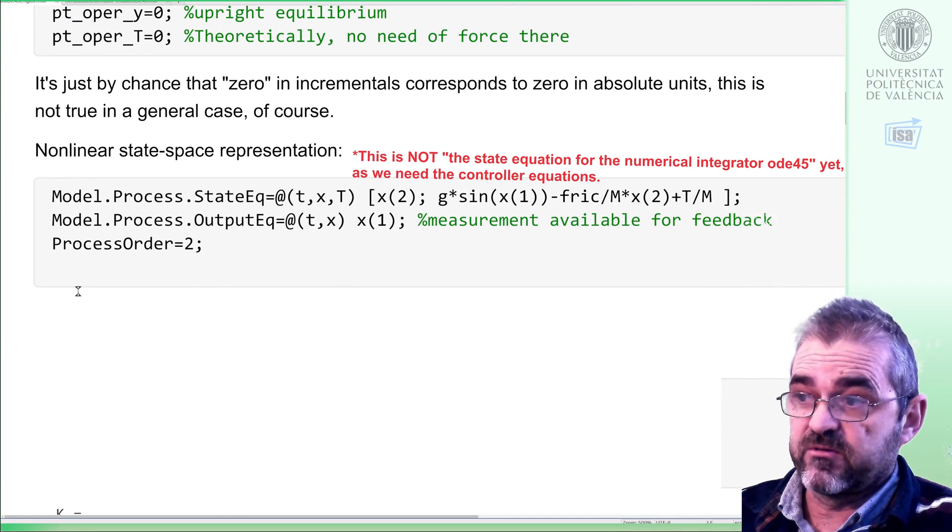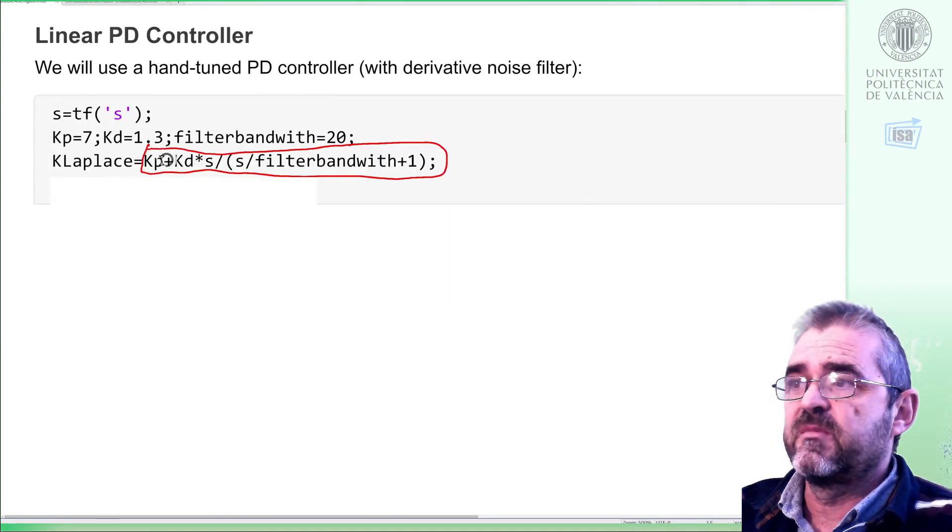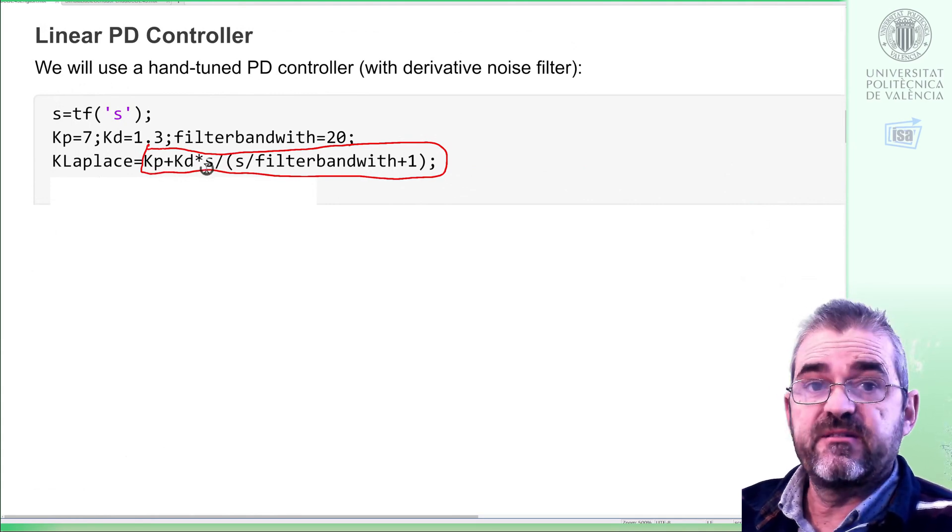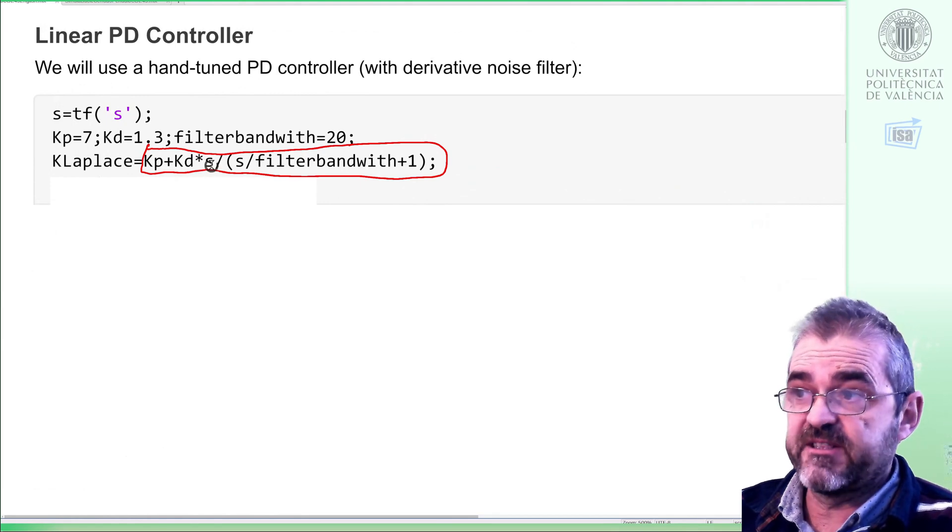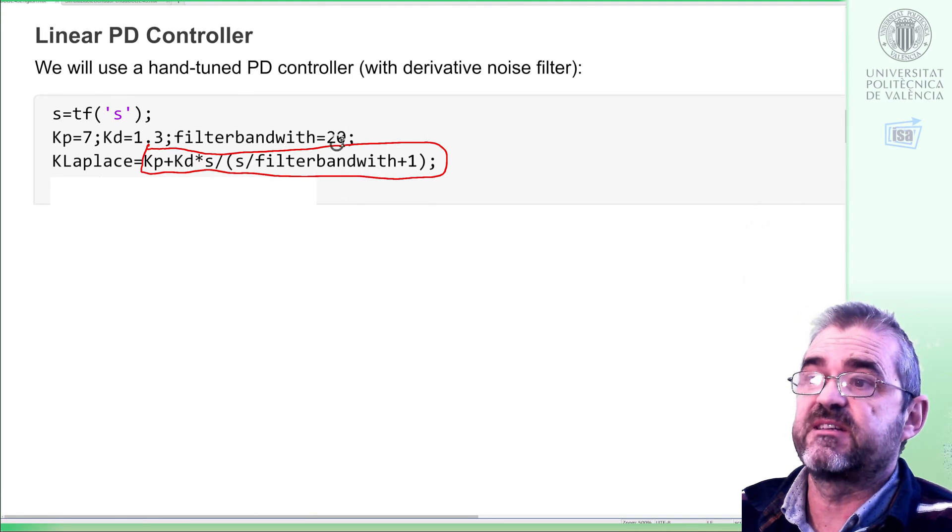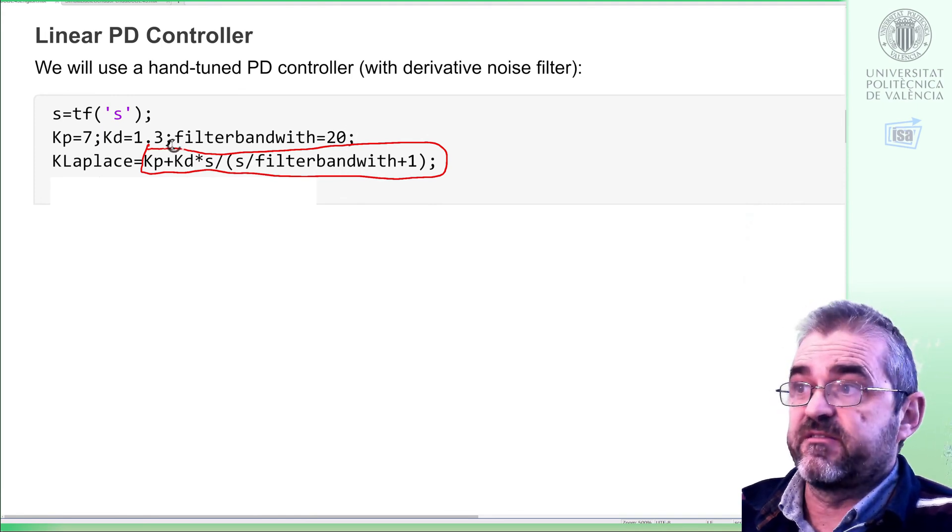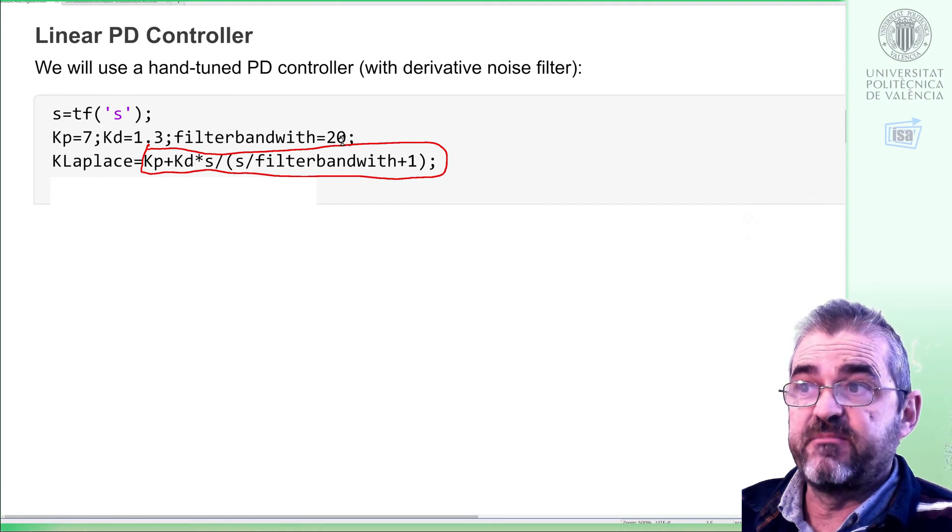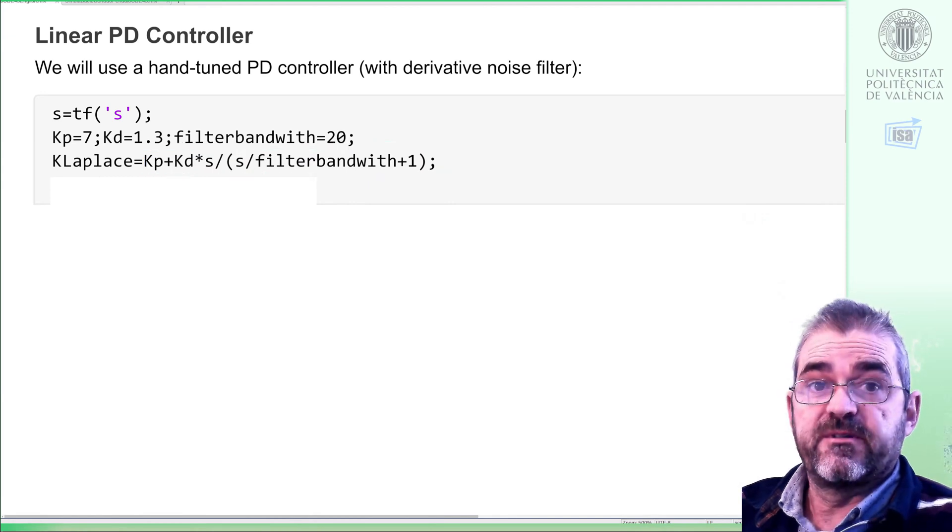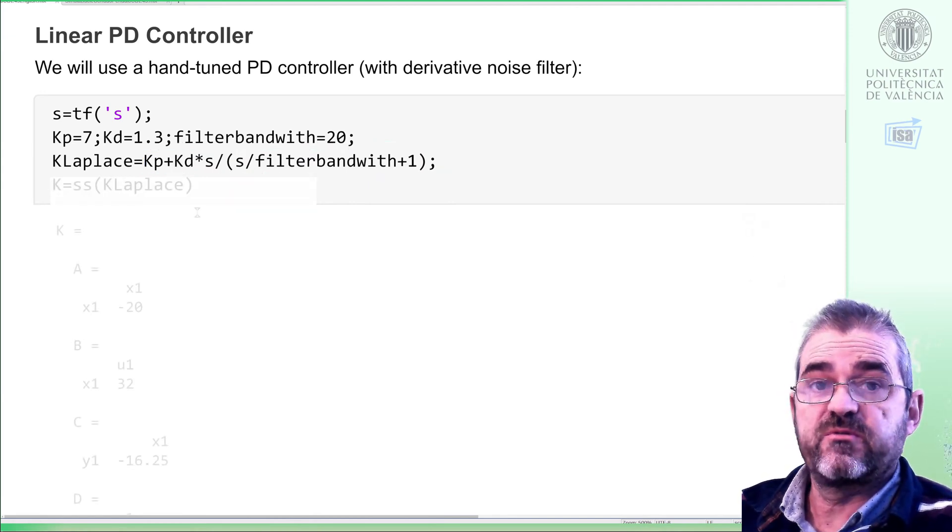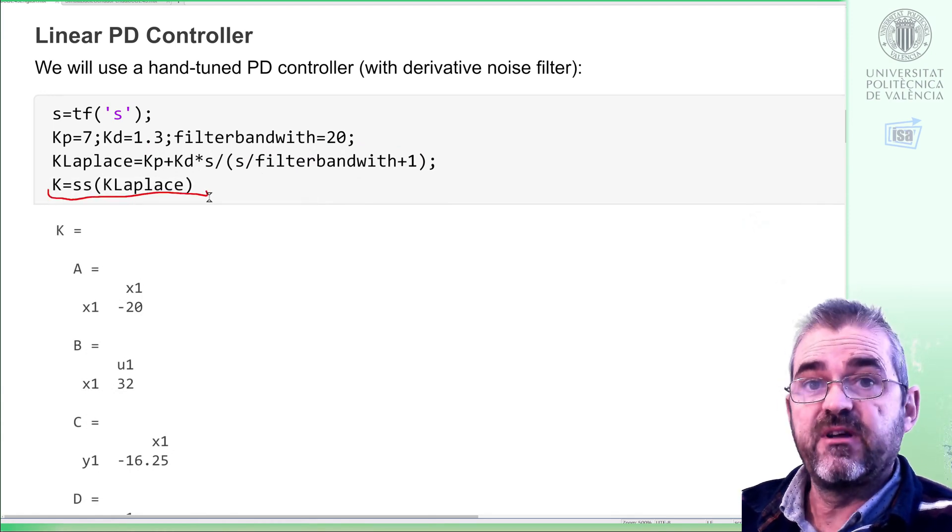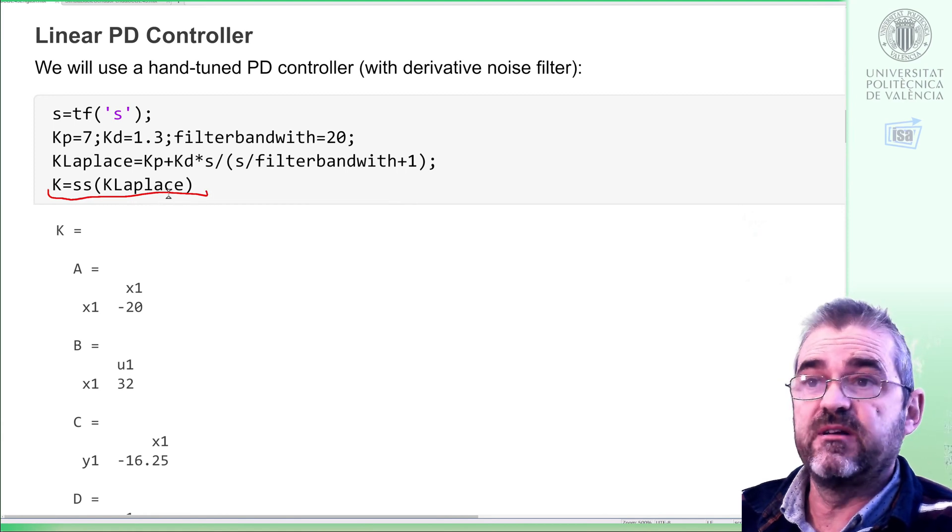Let's go with the model of the controller to be simulated. This will be the controller in Laplace transform: a proportional plus derivative term, and the derivative term will be filtered by a low-pass filter with a bandwidth of, in this case, 20 radians per second. Proportional derivative and bandwidth parameters have been hand-tuned by trial and error.